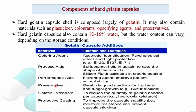Flavoring agents may be added to improve patient acceptability. Preservatives such as sulfur dioxide may be added since gelatin is a good medium for bacterial and fungal growth. Gelatin extenders like hydroxyalkyl starch can be added to reduce the quantity of gelatin needed per capsule. A protective coating may also be applied to improve capsule stability, moisture resistance, and to prevent capsule sticking.